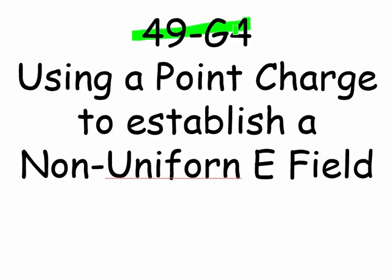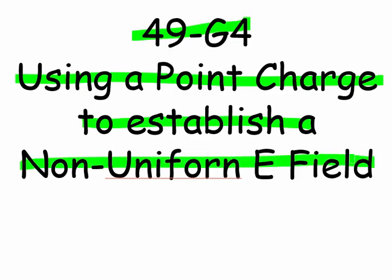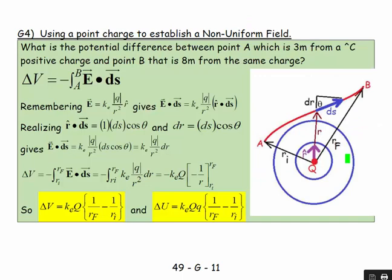Welcome, this is 49 G4 and this is about using a point charge to establish a non-uniform electric field. We're going to deal with a single point charge. Here's the situation: we have a point charge big Q and a point of interest that goes from A and ends up at B, imagining the line that it follows.